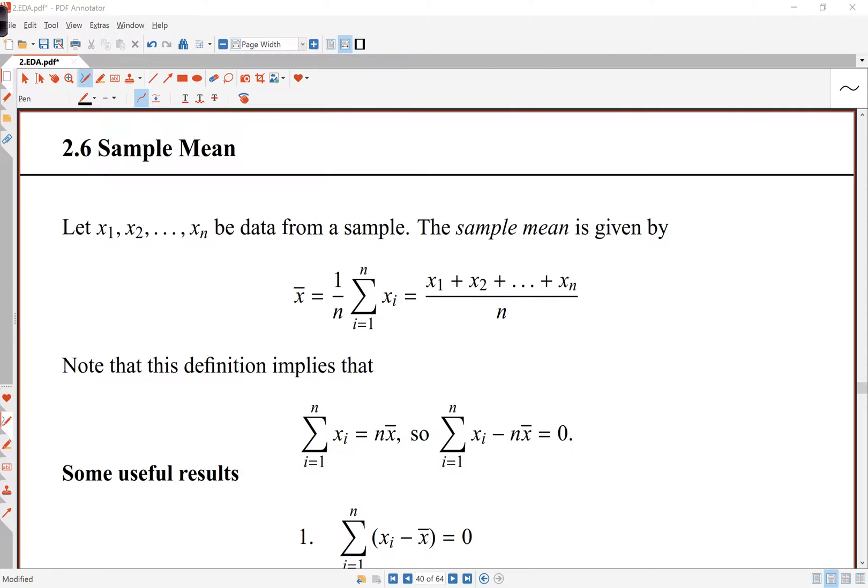In this lecture, we'll have a quick look at sample mean. If I've got data from a sample, x1, x2, up to xn data points, the sample mean or the sample average is just the usual average. I just add all the numbers and divide them by the number of observations.